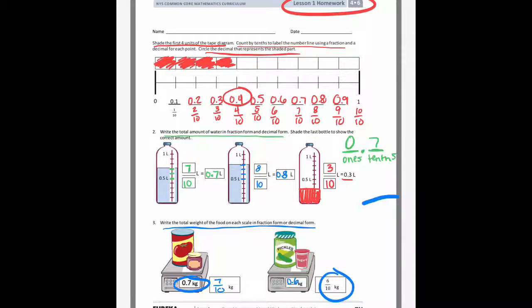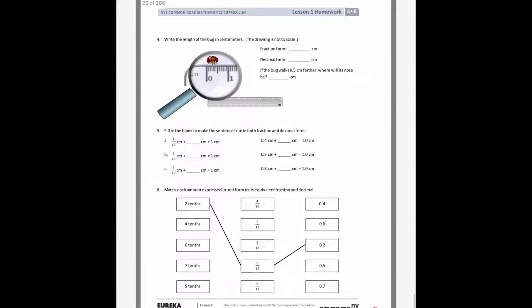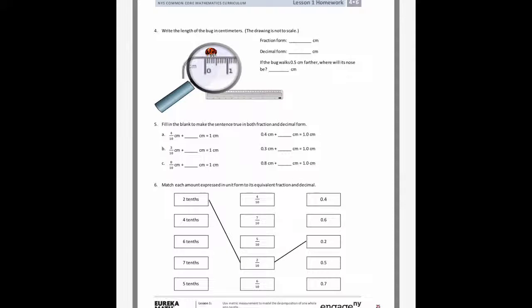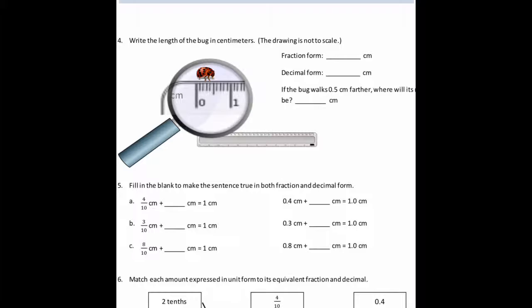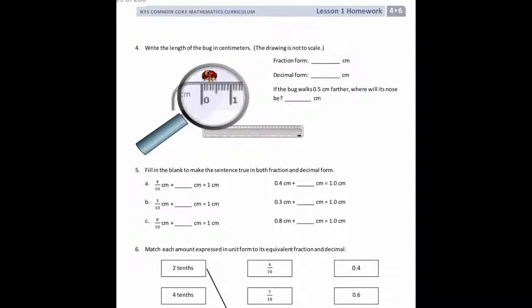Okay, on the next page, it says write the length of the bug in centimeters. So if I zoom in and I look at that bug, it's kind of hard to tell, but it looks like it's halfway between the 0 and the 1, but I'm going to count the little lines to make sure it's split into 10, just so we're accurate. So 1, 2, 3, 4, 5, that's where it stops, 6, 7, 8, 9, 10. So it is split into tenths, and that bug is 5 tenths of the way to the first centimeter.